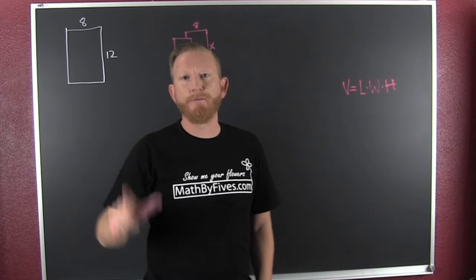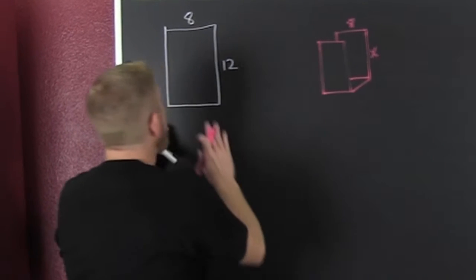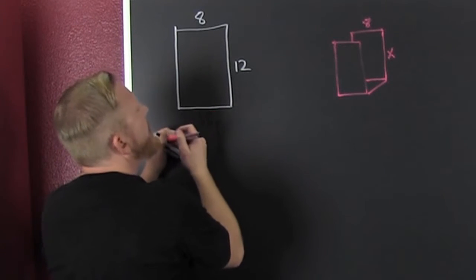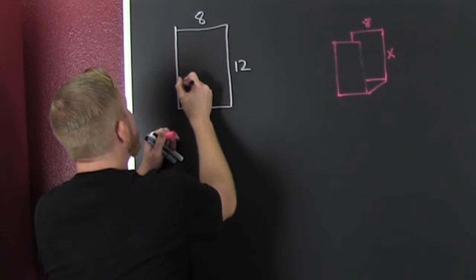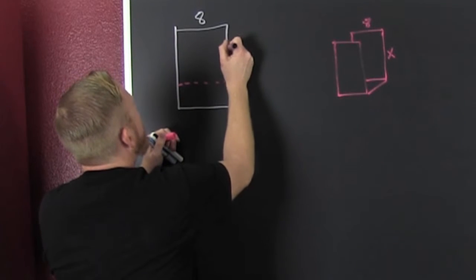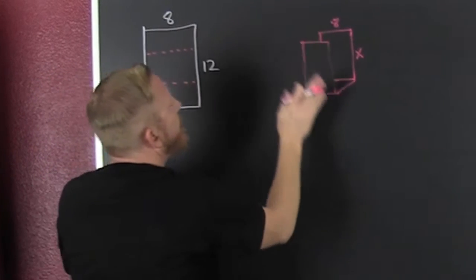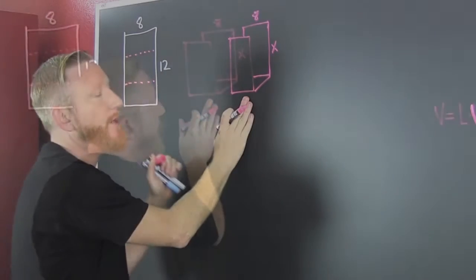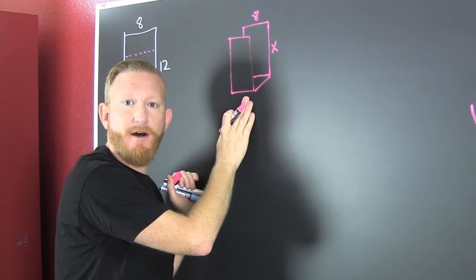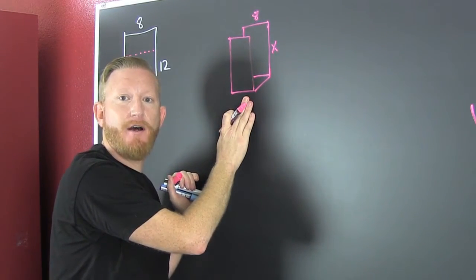It's the file problem. We're taking an 8 by 12 sheet and bending the sides up so that they make a file. We're trying to maximize the volume.